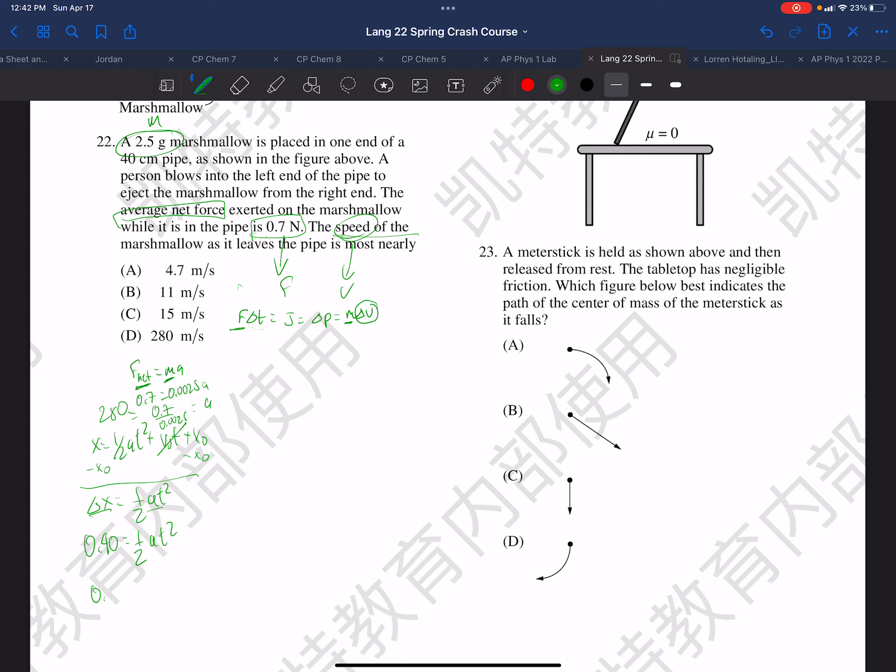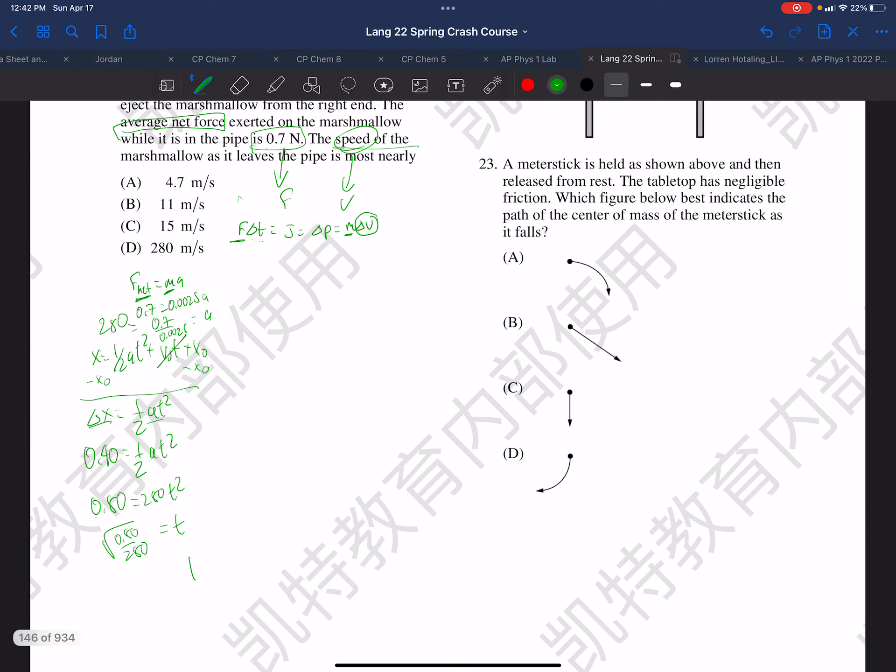So we have 0.80 equals 280 t squared, so t is the square root of 0.80 over 280, and that gives us a time of 0.05345.